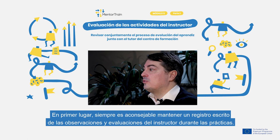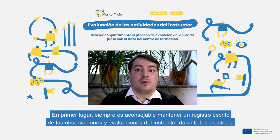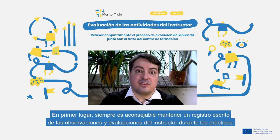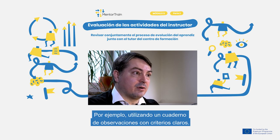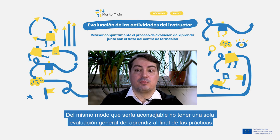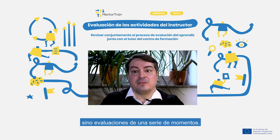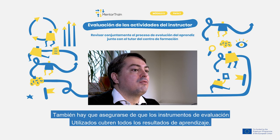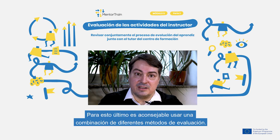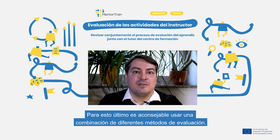Firstly, it is always advisable to keep a written record of your observations and assessment, for example by using an observation grid with clear criteria. It would also be useful to not have just one overall assessment of the apprentice at the end of the apprenticeship, but instead to build in a number of evaluation moments. Also, make sure that the evaluation instruments you use cover all the learning outcomes — for this, it can actually help to use a combination of different evaluation methods.